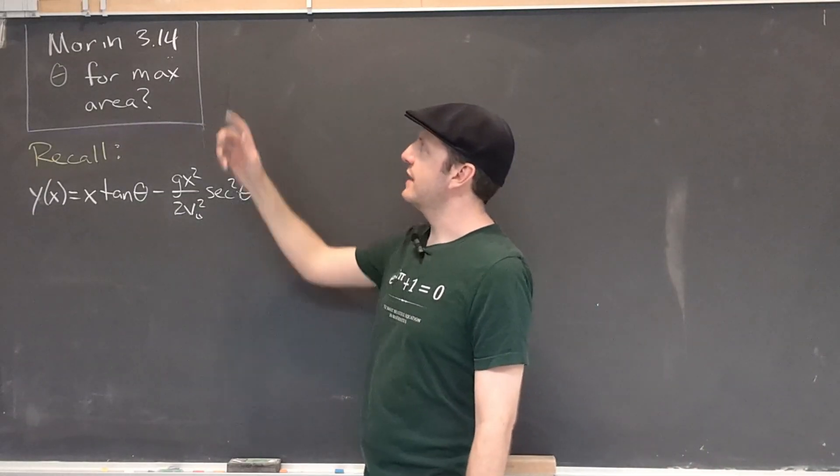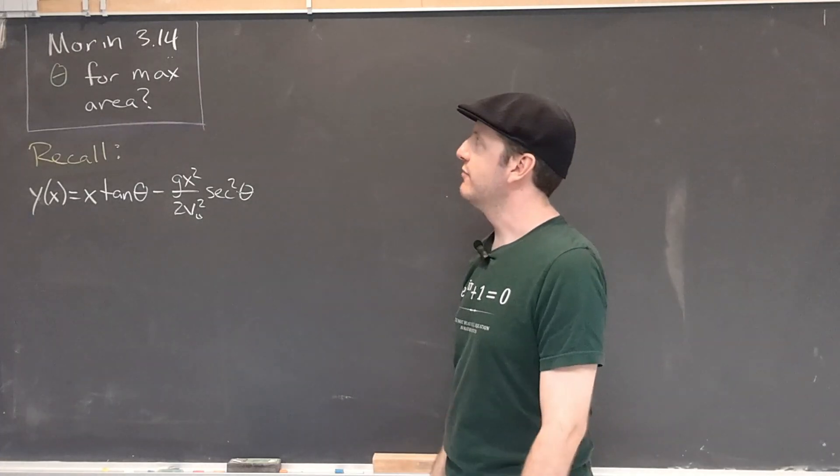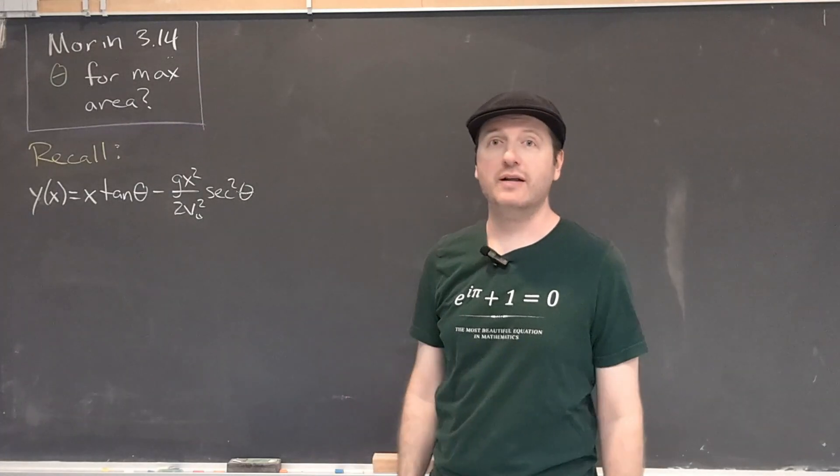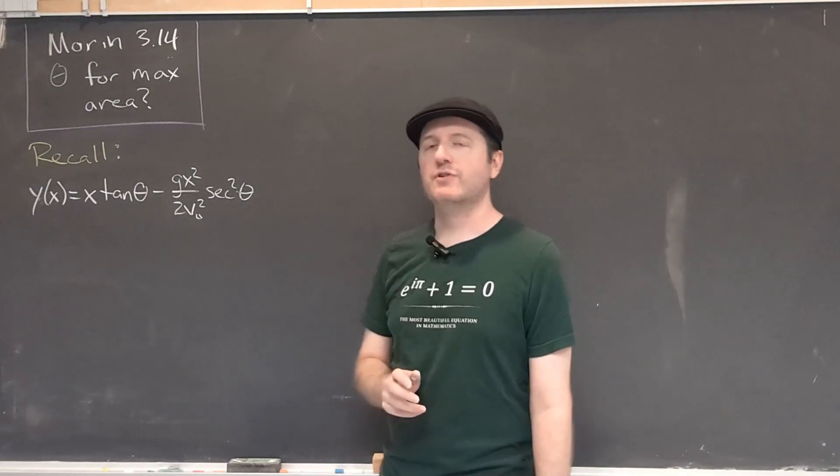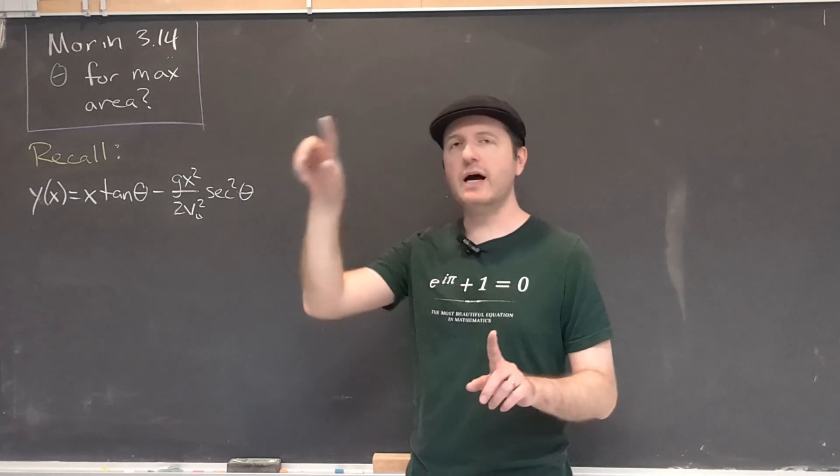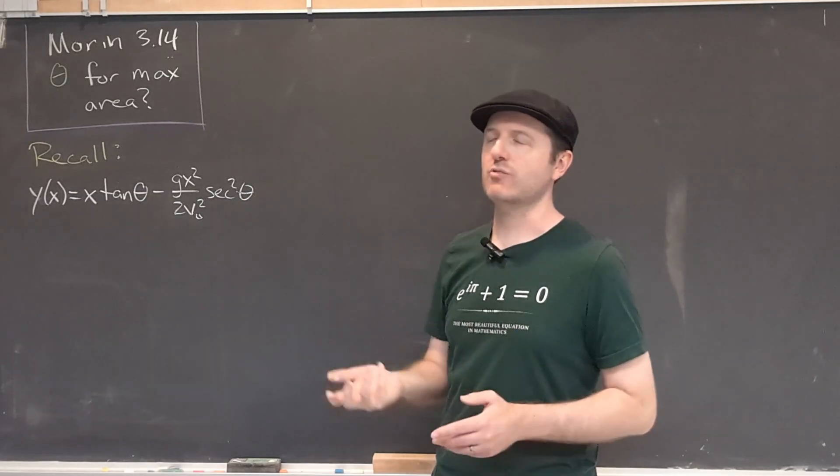Here's another question from Morin's textbook on introductory classical mechanics. It's number 3.14, kind of a nice number, I think. Let's ask, what angle should we launch our projectile so that the area under the trajectory is a maximum? Kind of an interesting question.